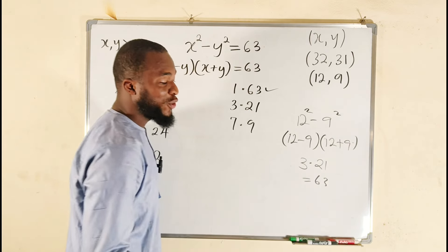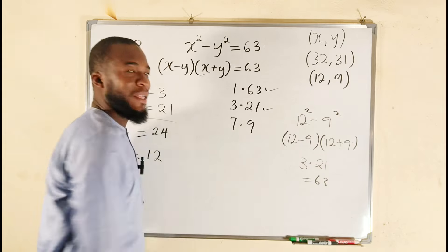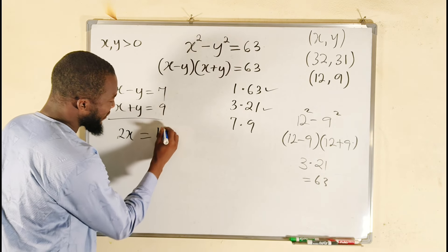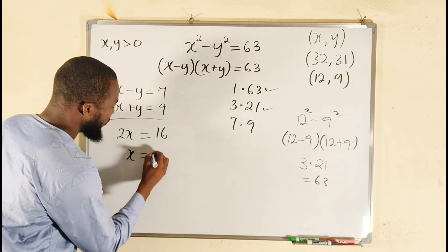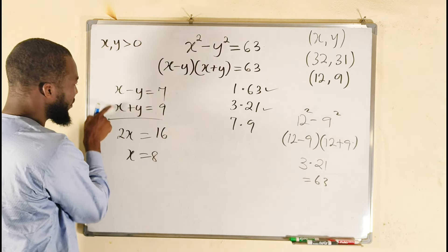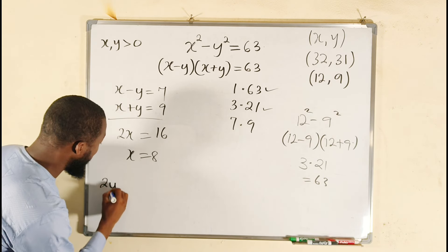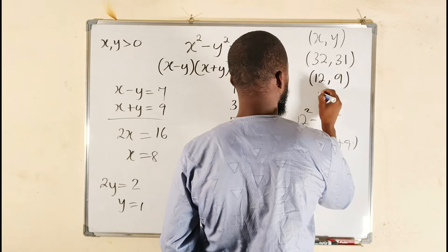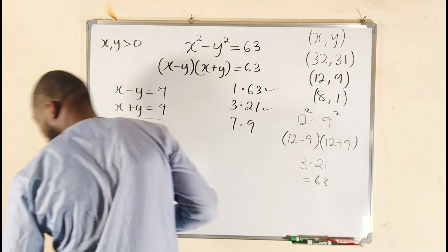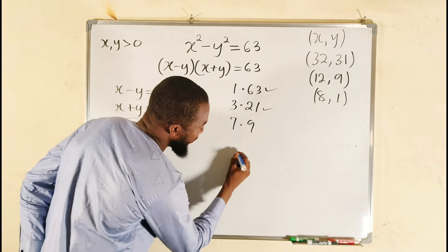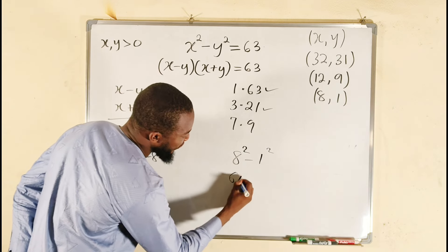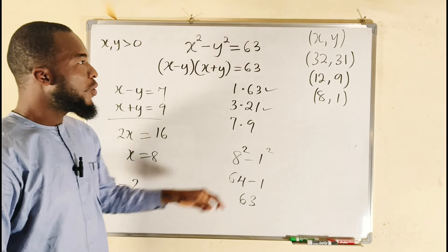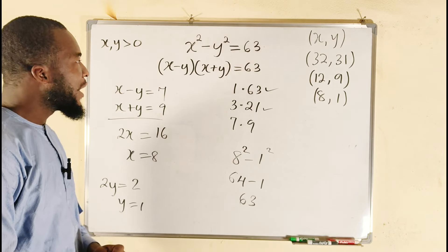Finally, for the pair 7 and 9: adding gives 2x equals 16, so x equals 8. Subtracting gives 2y equals 2, so y equals 1. Our third solution is x equals 8, y equals 1. Checking: 8 squared minus 1 squared equals 64 minus 1 equals 63. All three pairs of solutions satisfy the original equation.